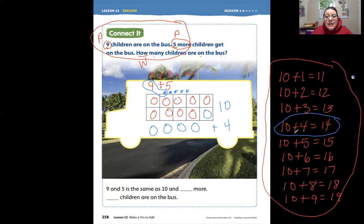Let's look over here. 10 plus 4 equals 14. Let's look here. It says 9 and 5 is the same as 10 and how many more ones? 1, 2, 3, 4. 4 more ones. So there are 14 children on the bus.